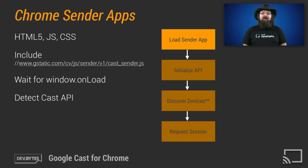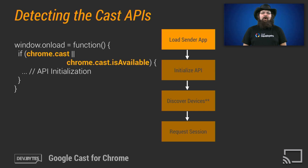A Chrome sender application must detect and initialize the Cast API before communicating with the Cast receiver. Prior to using the Cast APIs, the web sender application needs to first check that they are available. This is accomplished by looking for the existence of the chrome.cast JavaScript namespace and checking the chrome.cast.isAvailable boolean flag. Depending on how the web sender application loads its resources, it may need to set up a retry timeout to detect the Cast APIs.